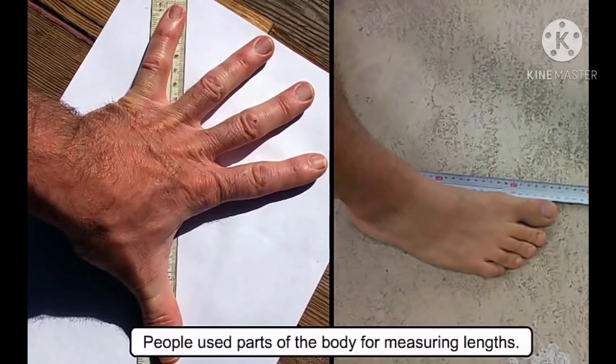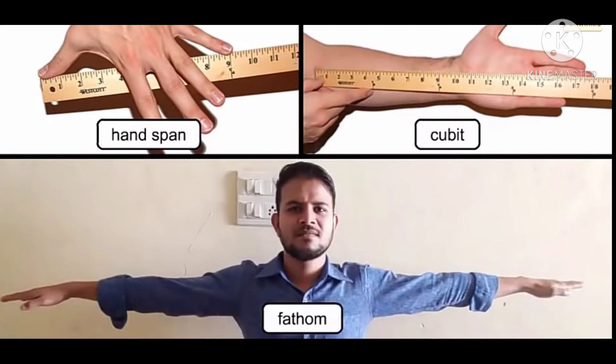Earlier people used parts of the body for measuring lengths. For example, handspan, cubit, and fathom.